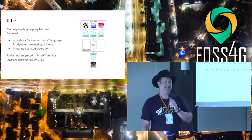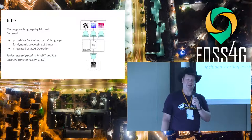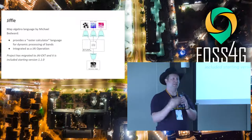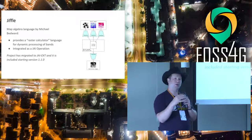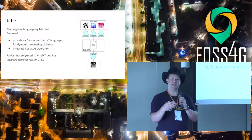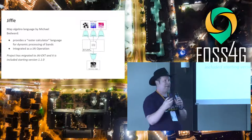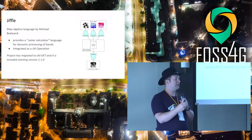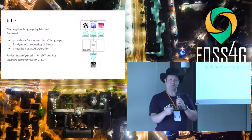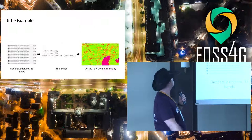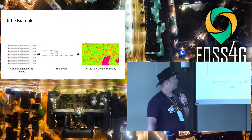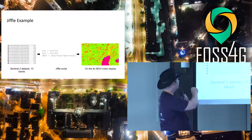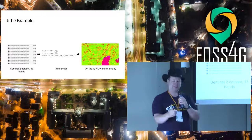One of the most fun examples here is called Jiffel. Jiffel is a domain-specific language — it's kind of like a raster calculator — that lets you define a little script on how you want all the raster bands calculated. It actually compiles the code right then and there into an operation that can run amazingly fast. You can put this into a little script in GeoServer and do these kind of dynamic computations on the fly.